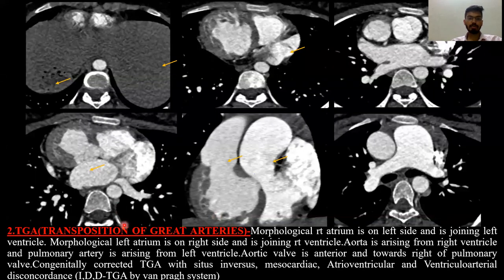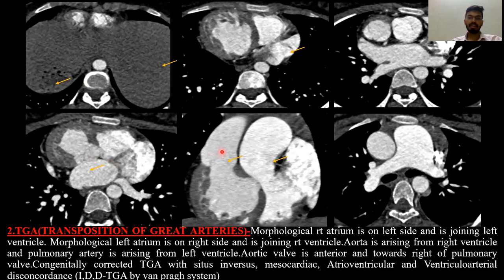The second case is TGA — transposition of great arteries. Situs inversus is present, as the stomach and spleen are on the right side and liver on the left side. The morphological right atrium is on the left side and joins the left ventricle, while the morphological left atrium is on the right side and joins the right ventricle. The aorta arises from the right ventricle and the pulmonary artery from the left ventricle. By the Van Praagh system, this is congenitally corrected TGA with situs inversus, mesocardia, and atrioventricular and ventriculo-arterial discordance.